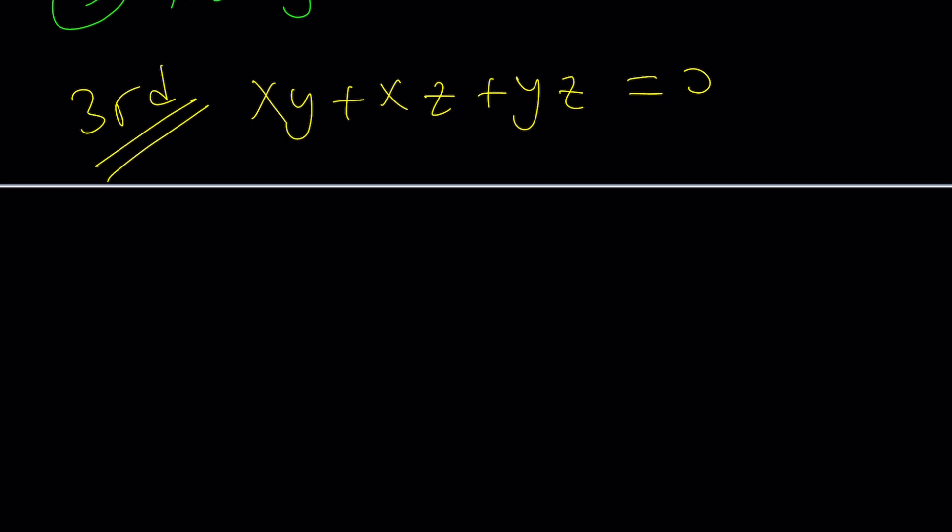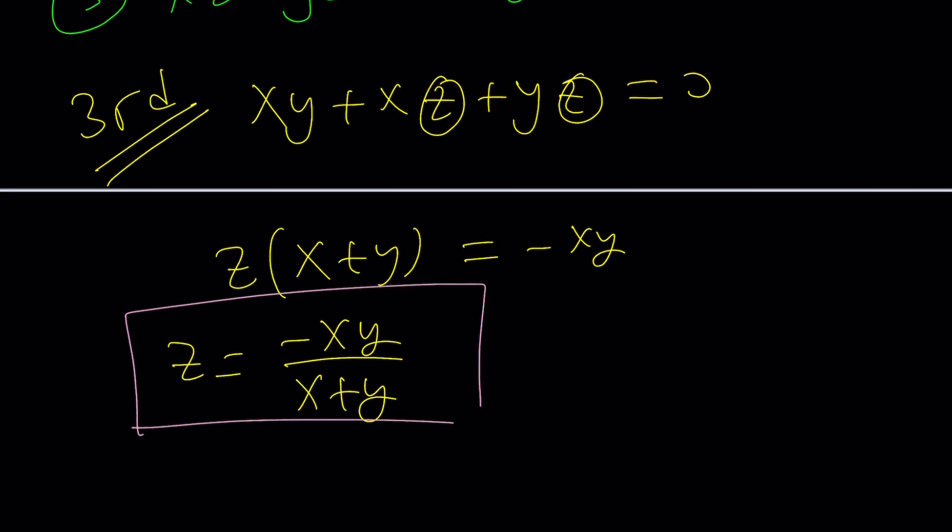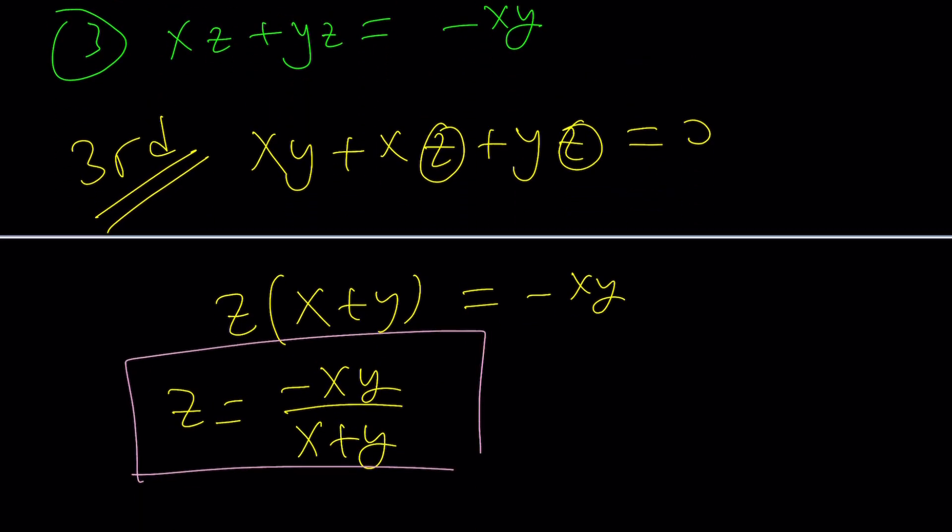I'm thinking about maybe isolating one of the variables and solving for it. For example, we can maybe just factor out a z here and write it as x plus y, and that is equal to negative xy. And from here, z can be written as negative xy over x plus y. And then we could possibly use this in the original expression. If you replace all occurrences of z with this, hopefully that'll give you something.